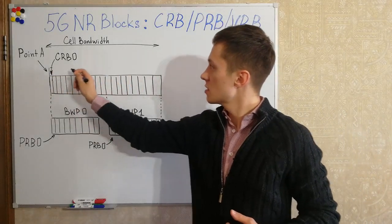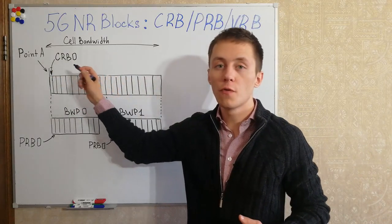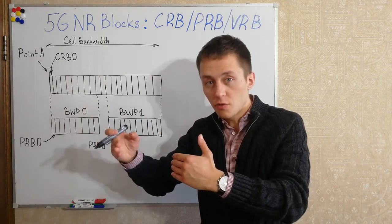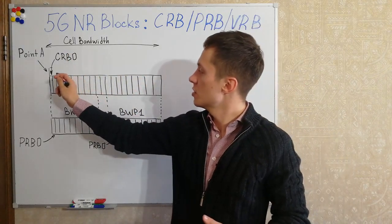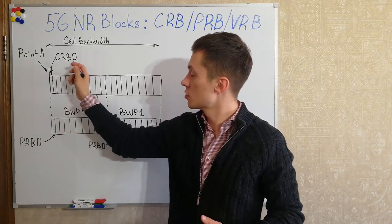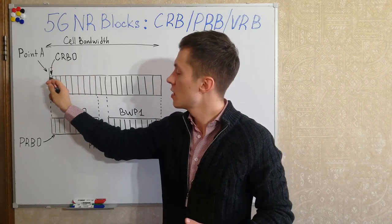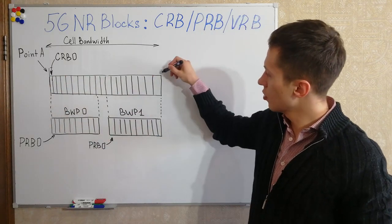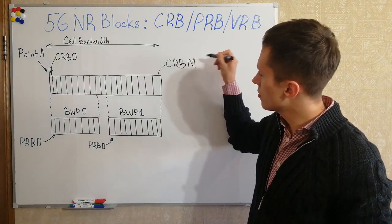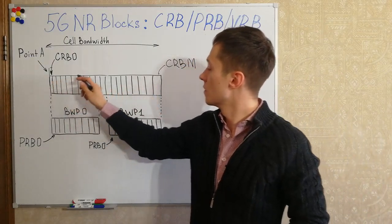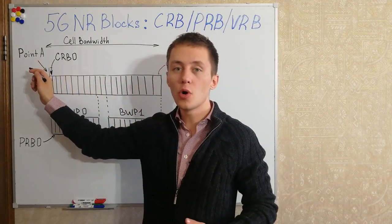As you can see, this is the whole cell bandwidth. Common resource blocks are used for numbering all resource blocks across the whole cell bandwidth. The first resource block is common resource block 0 — it starts and numbers all the resource blocks. This is common resource block M, numbering all resource blocks here. It starts from reference point A.